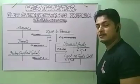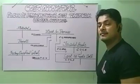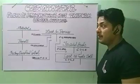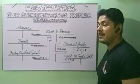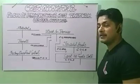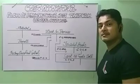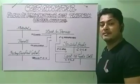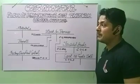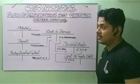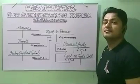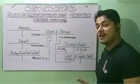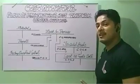Materials will be debited whenever they are being purchased by the manufacturing company. We record on the debit side because, according to the rules of debit and credit, asset increases go to debit. Whenever materials are being purchased, they are going to be recorded on the debit side.